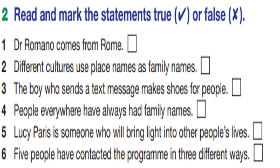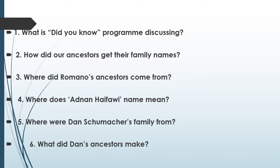Now let's answer the pre-questions. Exercise number two: read and mark the statements true or false. Number one: Dr. Romano comes from Rome — false. Number two: different cultures use place names as family names — false. Number three: the boy who sends a text message makes shoes for people — false. Number four: people everywhere have always had family names — true. Number five: Lucy Paris is someone who will bring light onto other people's lives — false. Number six: five people have contacted the program in three different ways — true.